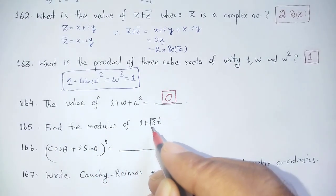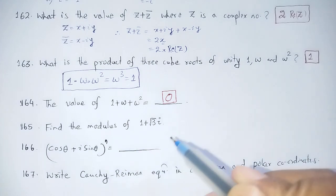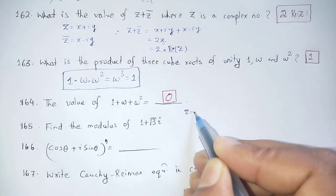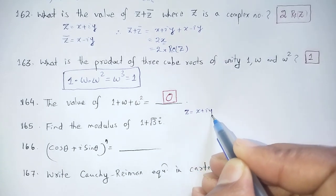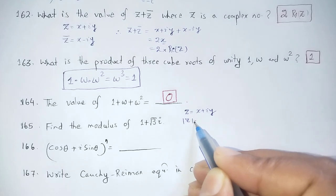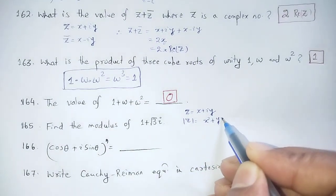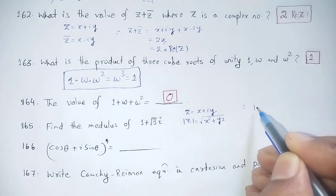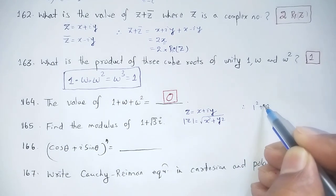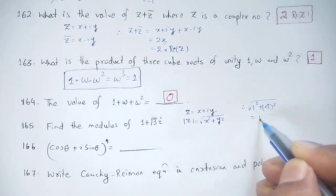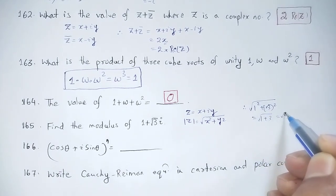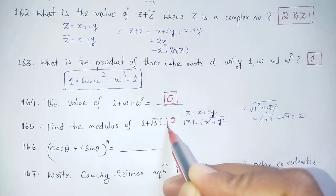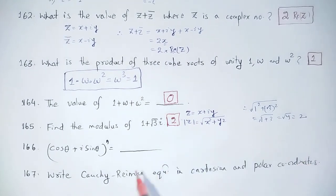Find the modulus of 1 + √3·i. The complex number is z = x + iy, and the modulus is |z| = √(x² + y²). So |1 + √3·i| = √(1² + (√3)²) = √(1 + 3) = √4 = 2. The answer is 2.